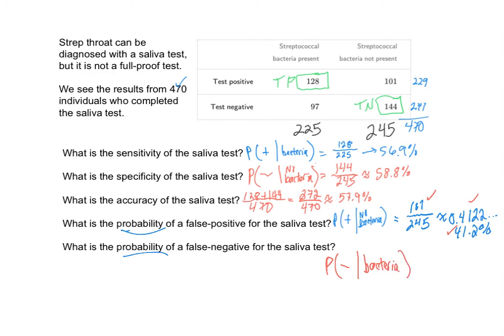So they have strep, but yet they come in, take the test, and the test says no, you don't. Out of everybody who has the bacteria — that's 225 individuals — those who were incorrectly identified by the test as negative are 97. So 97 out of 225, we get about 43.1%, or 0.431. All of these can be expressed as a fraction, decimal, or percent.